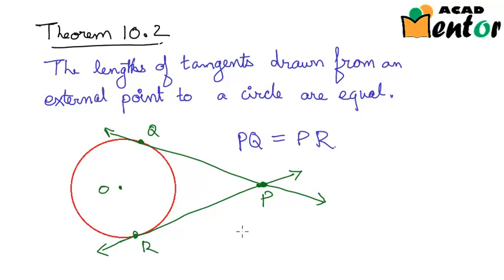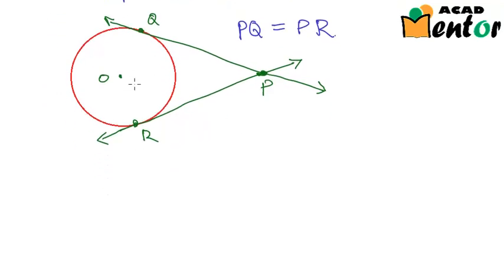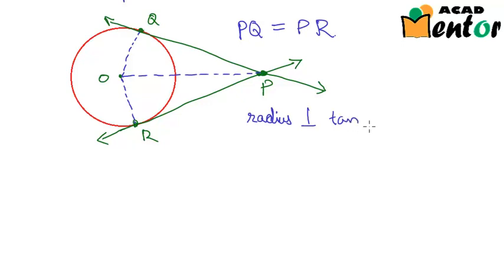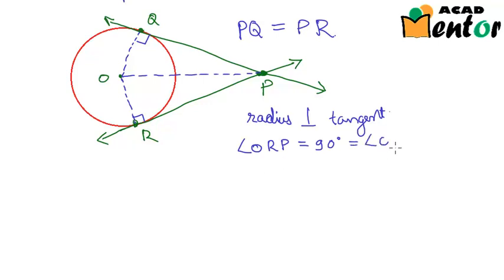Let's prove this theorem. We draw the radii OR and OQ and join OP. From the first theorem, we know the radius is perpendicular to the tangent at the point of tangency. So angle ORP equals 90 degrees, and similarly angle OQP equals 90 degrees, since OQ is a radius and PQ is the tangent.